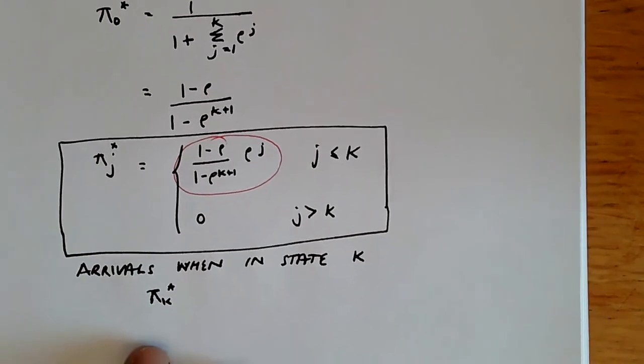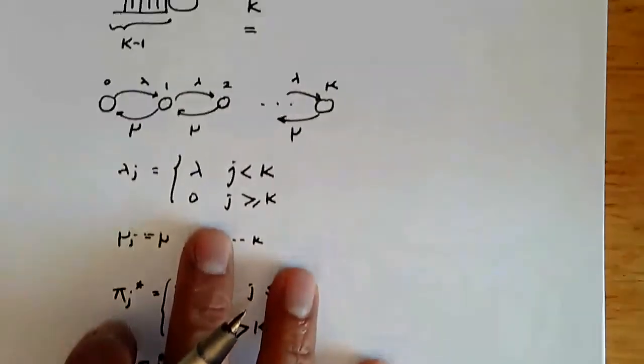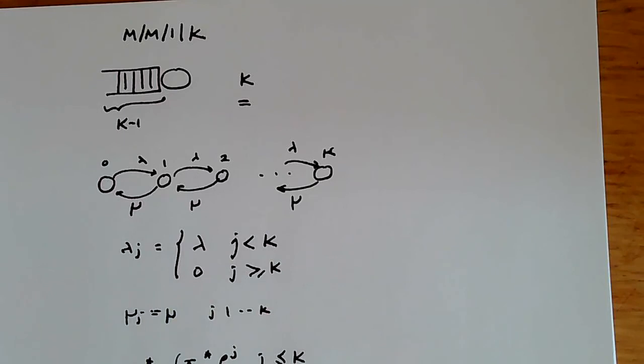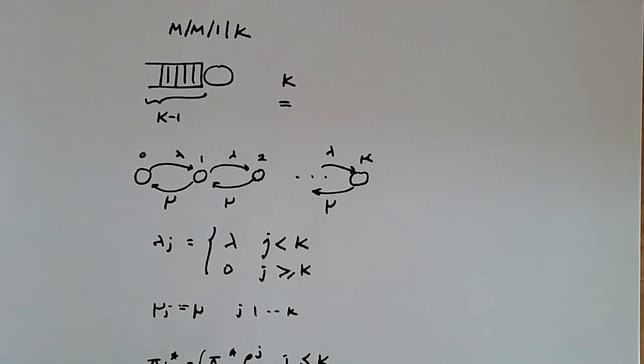It's also worth noting that in a system with bounded buffers such as this, the system is always stable no matter what the arrival rate is because excess arrivals are always dropped. So the queue cannot grow beyond bound, which is the meaning of instability by definition because of this property.